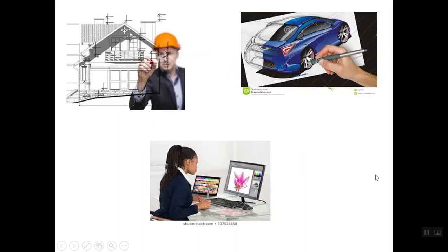We also have other engineers who design structures such as bridges and dams. As you can see in the picture here, an architect or engineer is drawing the plan of a house, and another is coming up with the design of a car. Before cars become real, an engineer sits down and draws the shape of the car using advanced graphic packages — determining the colors, the shape, how the vehicle will look, and what the rims will look like.